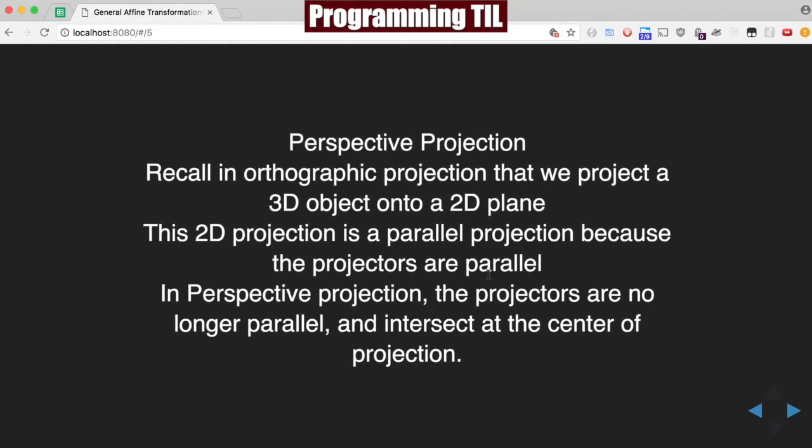So, perspective projection. Recall in orthographic that when we project from 3D to 2D, the 2D projection is parallel because the projectors are parallel, so it's the same size, it's just in 2D. For perspective projection, the projectors are no longer parallel, and they intersect at a center of projection. I'll show you what that means in a second.